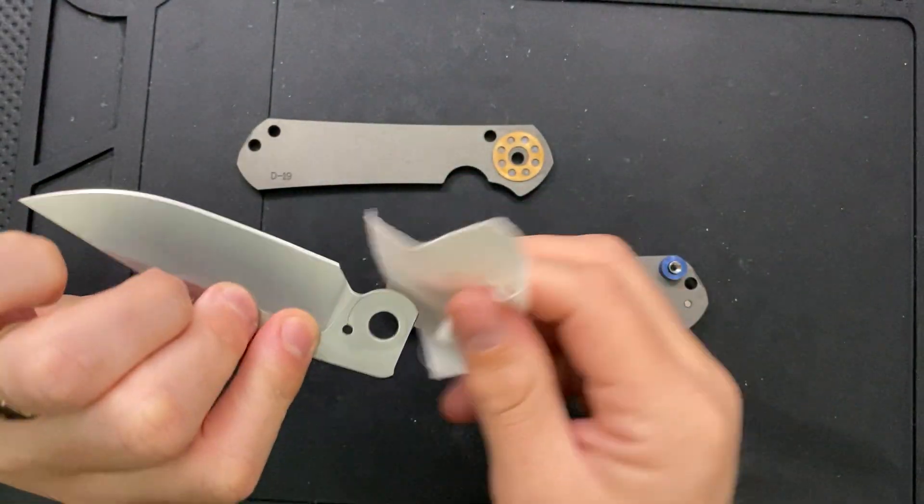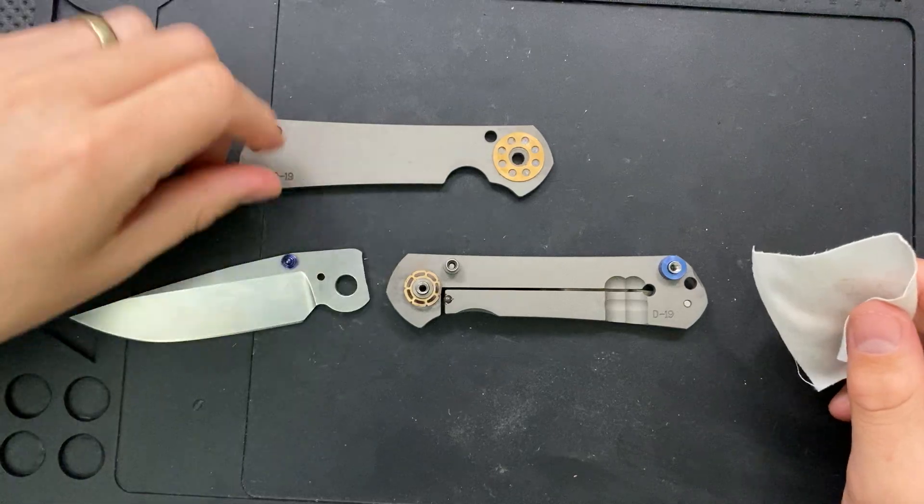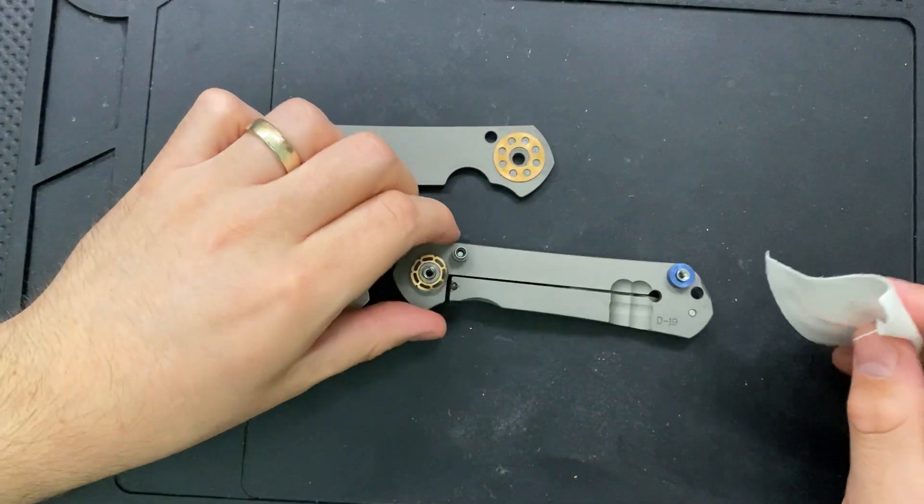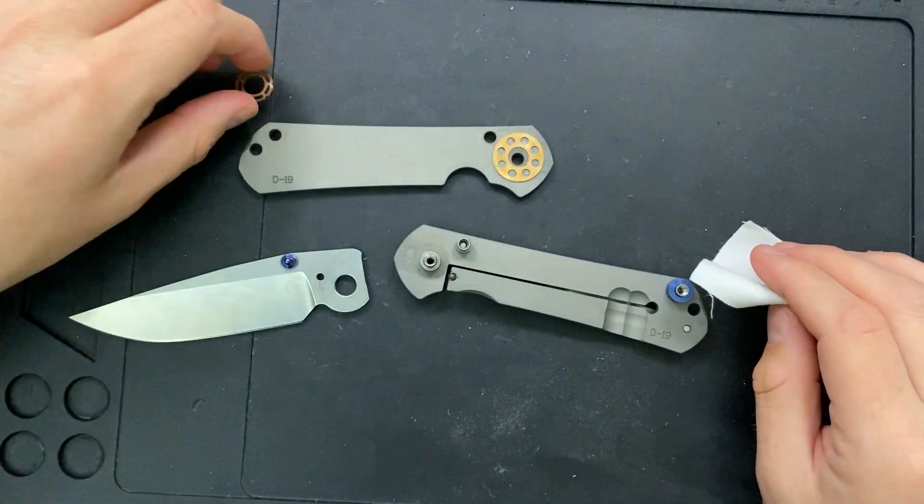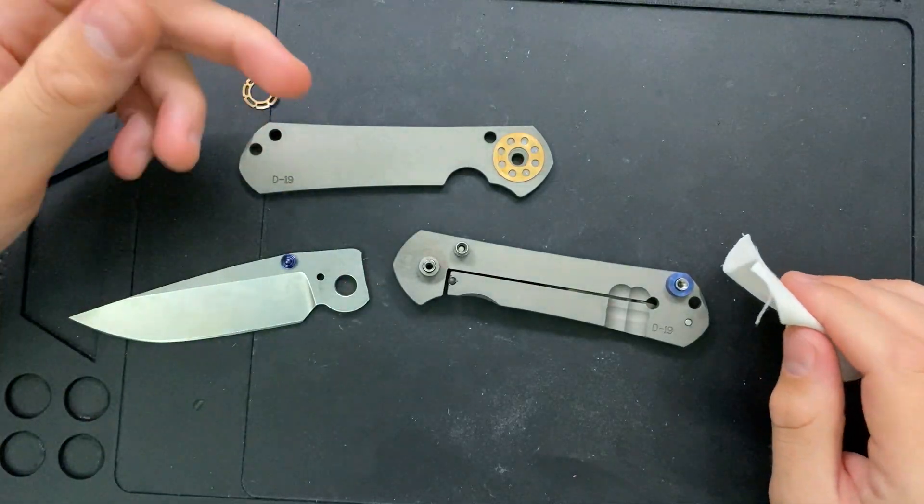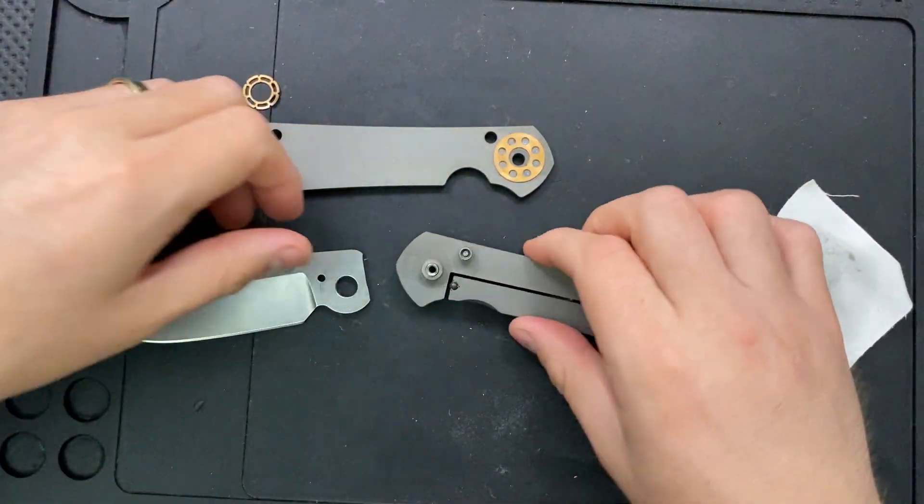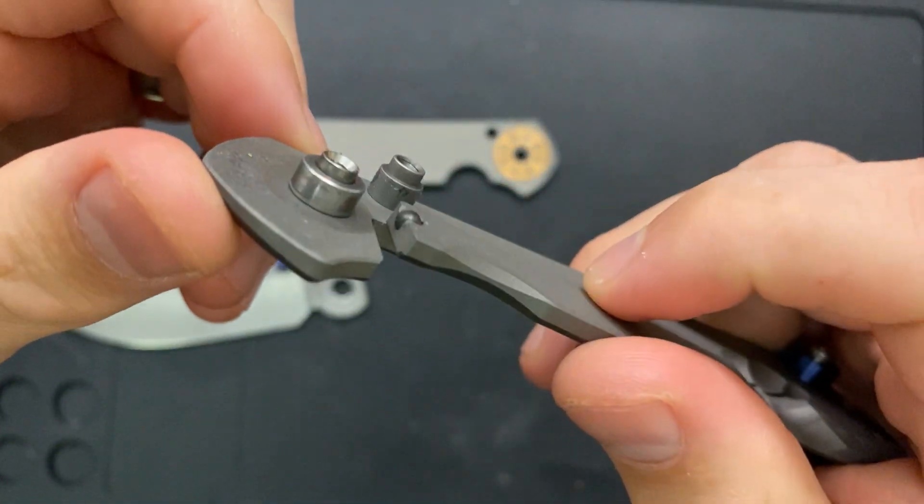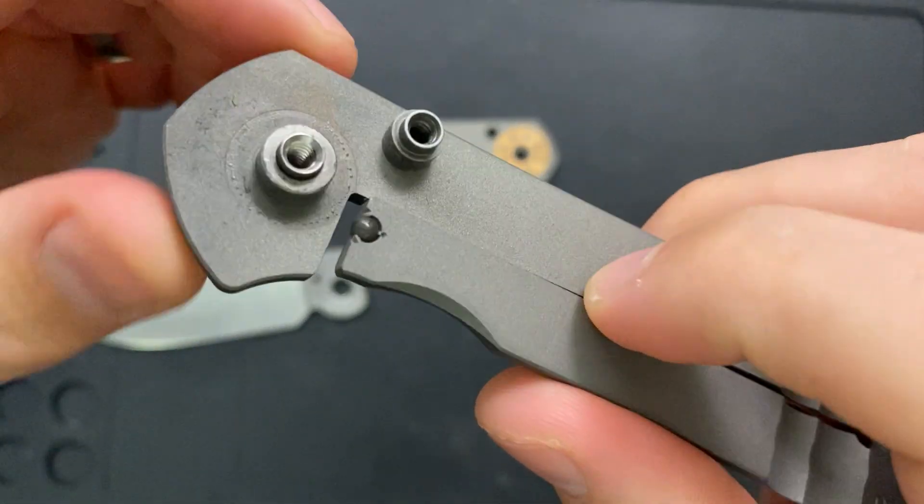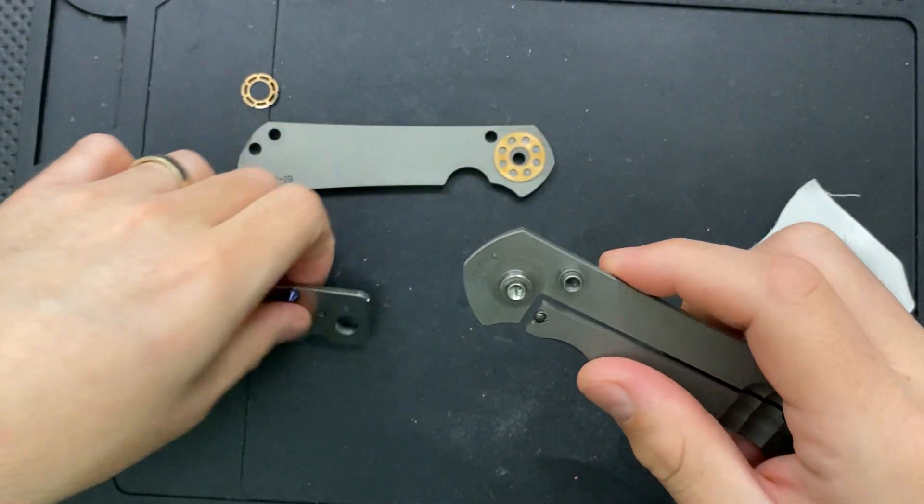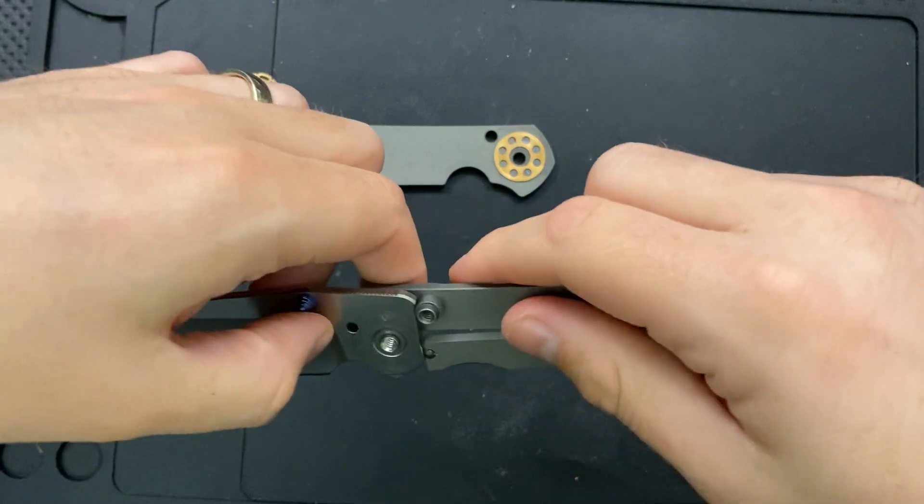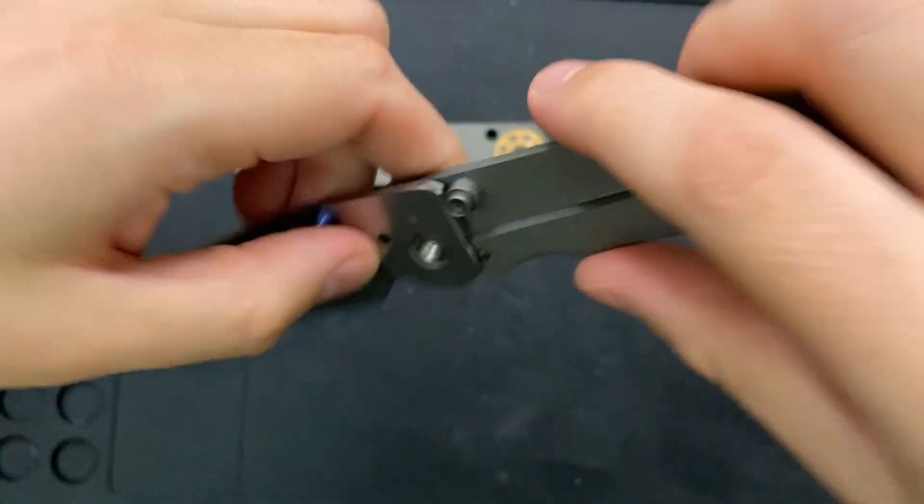So the Sebenza 31, the main difference is they've got a couple little quality of life things, like changing the position of the clip. But for the most part, the big difference with the Sebenza 31 is the detent ball here. You can see here that the detent ball is now a big old ceramic ball and that that is also the lock bar interface. So that is the thing that sits up against the blade here.